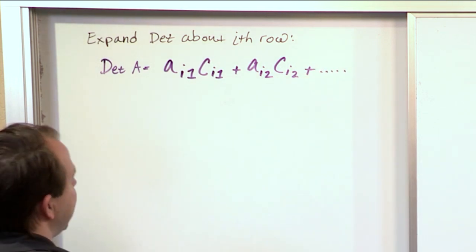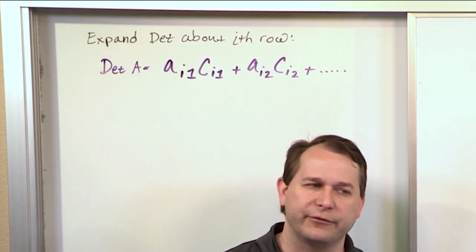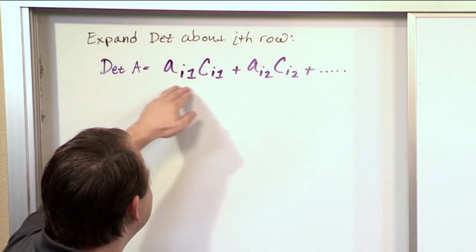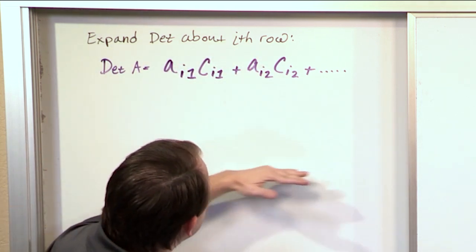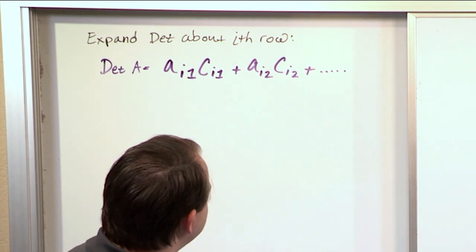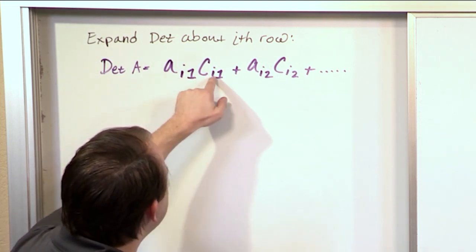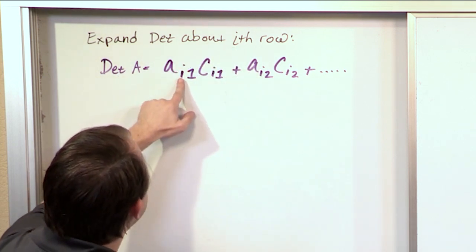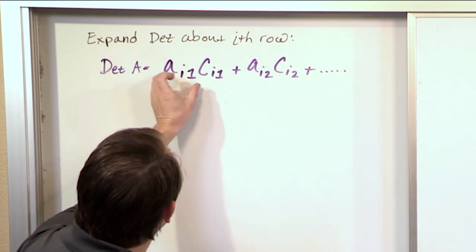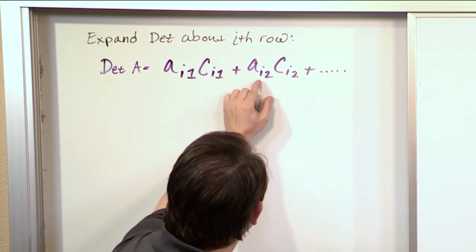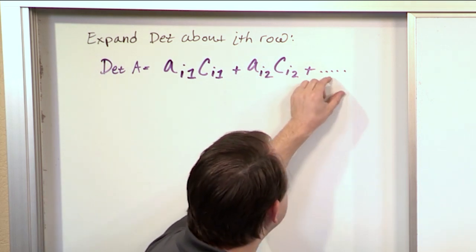Now, if I showed you this in a book, most students probably wouldn't understand what that meant at first glance. All this statement is telling you is that you can find the determinant by expanding about any ith row — row one, row two, row three, or row five if you have a large matrix. You take the element of the matrix at whatever row you're at — i is a dummy variable — and you multiply it by its cofactor. Then in the same row, the next element times its cofactor, and the next element times its cofactor.